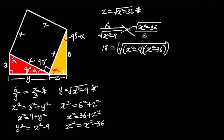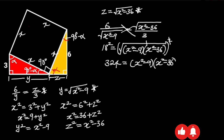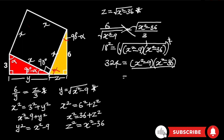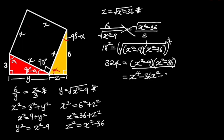Next, let's take the square of both sides. On the left side, 18 squared is 324. And on the right side, the square will cancel out the square root, leaving us with x squared minus 9, times x squared minus 36. Expanding this gives us x to the power 4, minus 36x squared, minus 9x squared, plus 324. Minus 36x squared minus 9x squared is 45x squared, so we are left with x to the power 4, minus 45x squared, plus 324.